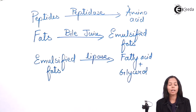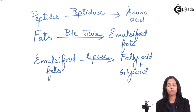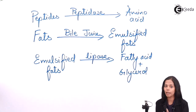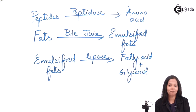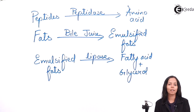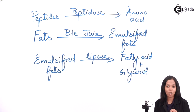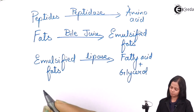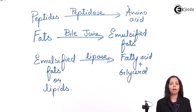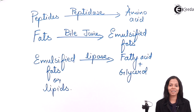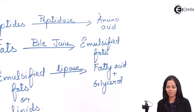The enzyme that breaks down emulsified fats into fatty acids and glycerol is called lipase. It is called lipase because biologically fats are called lipids. With this, we have completed the functions of the small intestine. Thank you very much, students.